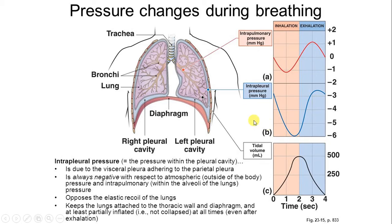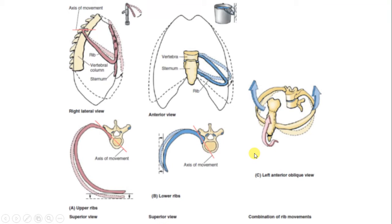This minus 6 negative pressure causes further expansion of the lungs, creating a suction effect. Basically, it is the difference in the pleural cavity pressure — from minus 4 to minus 6 — that causes inflation of the lungs. This negative pressure is created by the movement of the chest wall, by the rib muscles and the diaphragm. With this concept in mind, we can now understand the movements of the chest wall and respiratory movements.